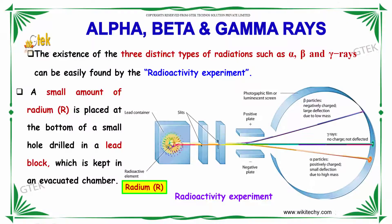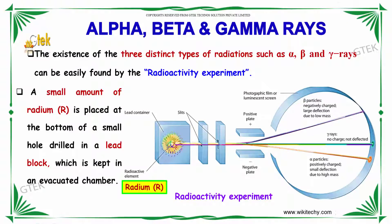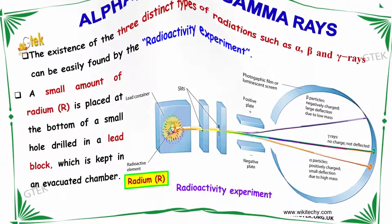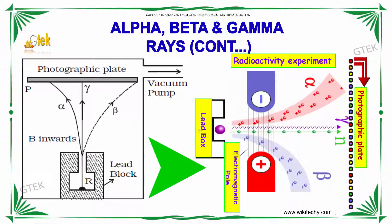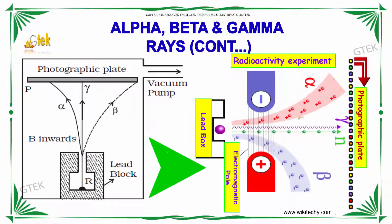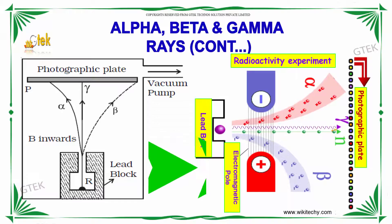A small amount of radium is placed at the bottom of a small hole drilled in a lead block, which is kept in an evacuated chamber. This is how radioactivity is demonstrated — showing alpha, beta, and gamma radiation.